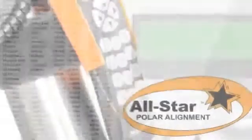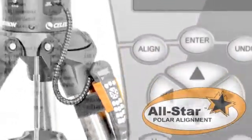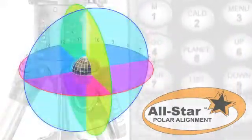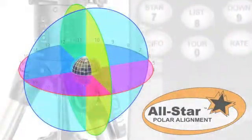With the CGE Pro, we introduced a new feature to simplify the Polar Alignment process. All Star Polar Alignment allows you to make use of any bright star that's available in the hand control to do Polar Alignment. All Star allows you to choose any bright star listed on the NexStar hand control to assist in accurately aligning your telescope's mount with either one of the celestial poles.